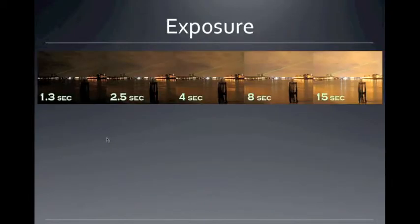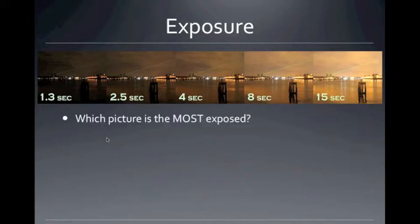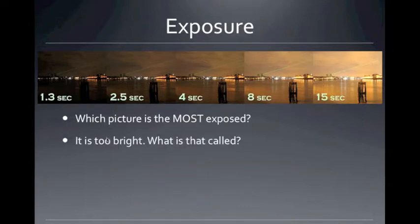So in these five exposures here, the one on the right is more exposed and the one on the left is less exposed. More light was allowed to hit the one on the right and less light was allowed to hit the one on the far left. The most exposed one is the one that had light for 15 seconds on the right — it's too bright. This is called overexposed.